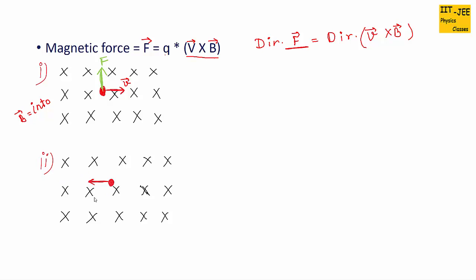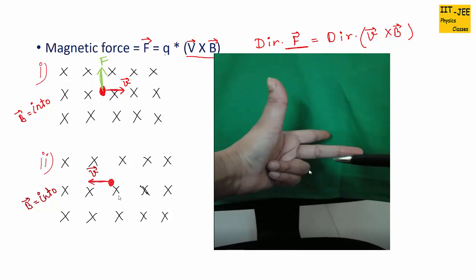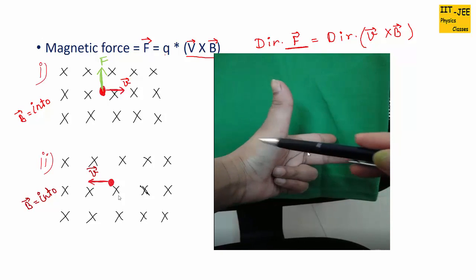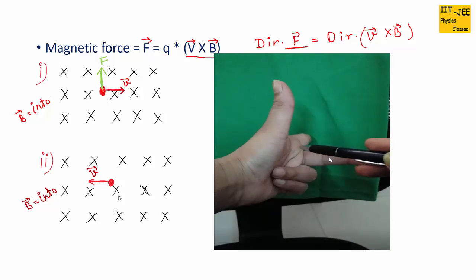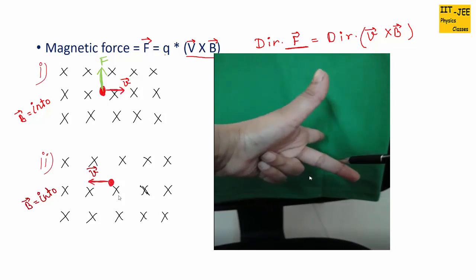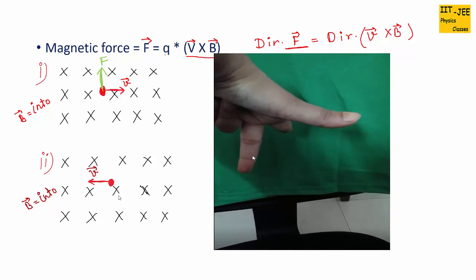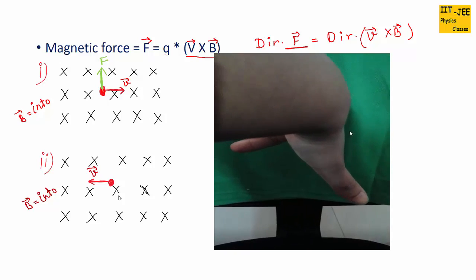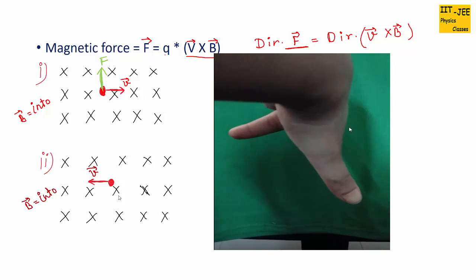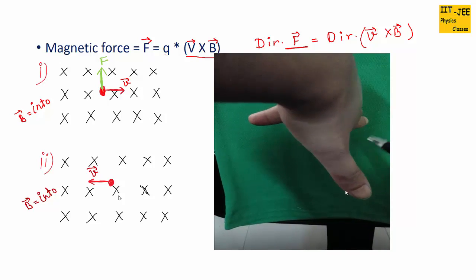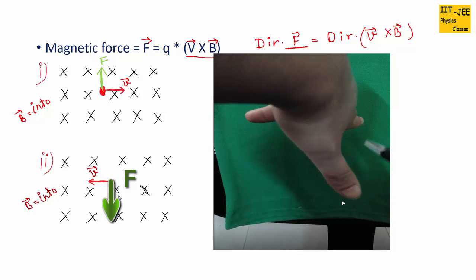In the second case, the magnetic field is again shown by crosses, meaning it is into the page, but the charge is now moving towards the left. So the velocity vector points left. Applying the left hand rule — turning the hand so the middle finger points left and the forefinger points into the page — the thumb ends up pointing downward. That means the resultant magnetic force on this charge is directed downward.